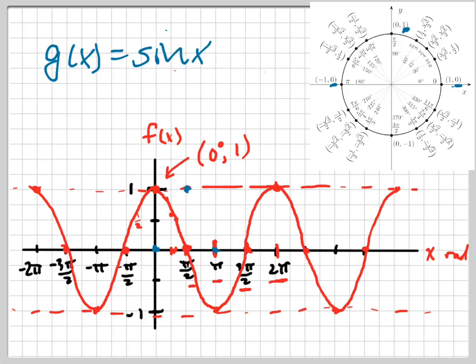The sine of three pi over two is negative one. So it goes down there. And the sine of two pi is zero, back to zero. So this one looks very similar.